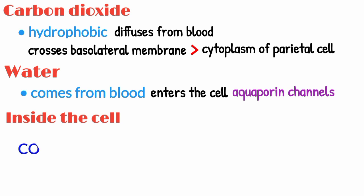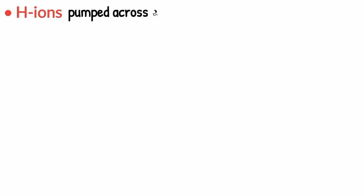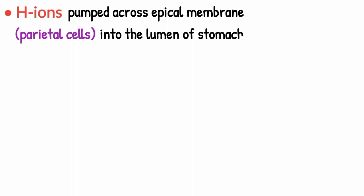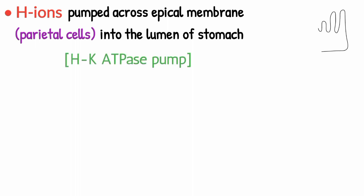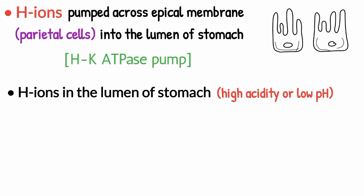Once inside the cell, carbon dioxide and water are combined using the enzyme carbonic anhydrase. This enzyme makes carbonic acid, which then dissociates into bicarbonate ions and hydrogen ions. The hydrogen ions are then pumped across the apical membrane from the luminal side of the parietal cells into the lumen of the stomach, with the help of a hydrogen-potassium ATPase pump that requires ATP for its fuel. Lots of hydrogen ions in the lumen of the stomach is what gives the stomach its acidic pH.